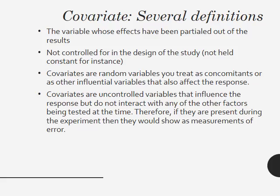There are several definitions of covariate. It's a variable whose effects have been partialed out of the results. It's a variable that's not controlled for in the design of the study — it's not held constant, and you can't force people to levels of it, like income. Covariates are random variables you treat as concomitant or other influential variables that also affect the response. Covariates are also uncontrolled variables — you didn't force them on people. They influence the response, but they're not expected to interact with any of the independent variable factors being tested. Therefore, if they are present during the experiment and you didn't control for them, they would show up as measurement error.